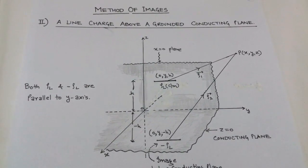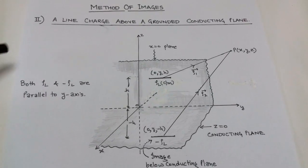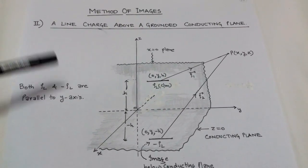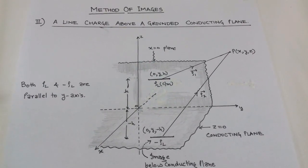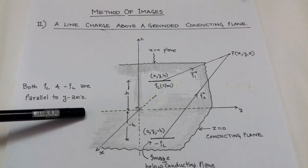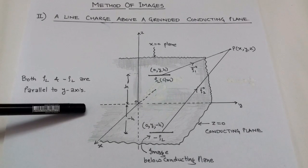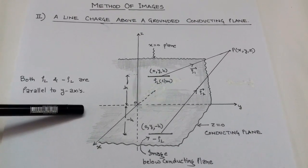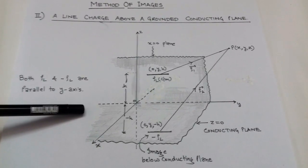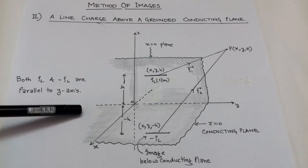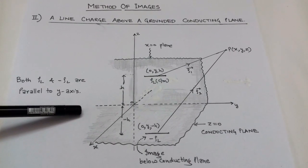Method of images. According to the method of images, we first consider a charge configuration situated above a perfect conducting plane having potential 0. According to this method, the given charge configuration can be replaced by its image, and the conducting plane is replaced by an equipotential surface.